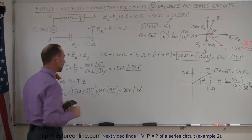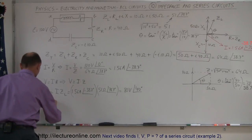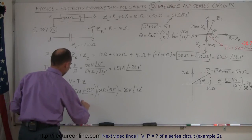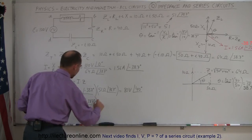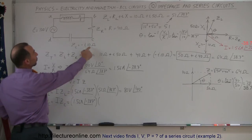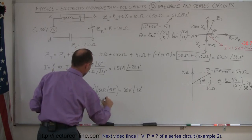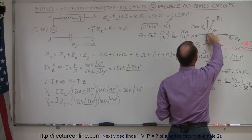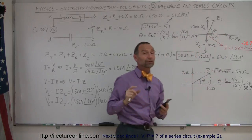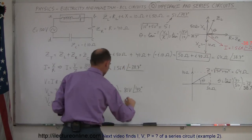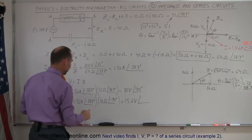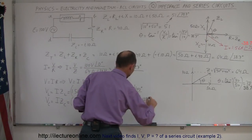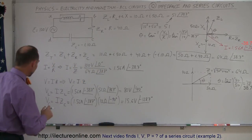Next, V_C equals I times Z_C: 1.56 amps at negative 38.7 degrees multiplied by the impedance of the capacitor, which is 10 ohms at negative 90 degrees (since there's no resistance component, the phase angle is purely negative 90 degrees). Multiplying: 1.56 times 10 gives 15.6 volts, and the phase angle is negative 38.7 plus (negative 90) equals negative 128.7 degrees. So V_C equals 15.6 volts at negative 128.7 degrees.